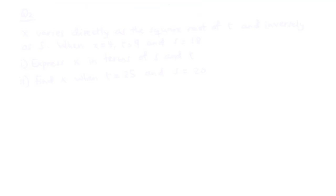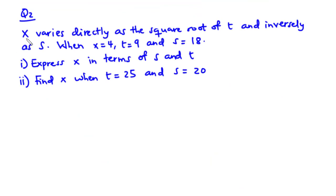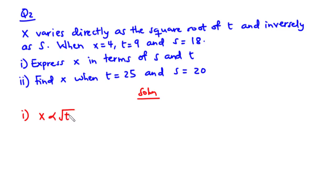Now let's solve the second example. x varies directly as the square root of t and inversely as s. When x is 4, t is 9 and s is 18. We write the relation: x varies directly as the square root of t and inversely as s, giving us x equals k times the square root of t divided by s. Let's call this equation 1.